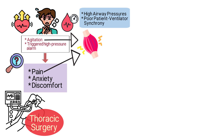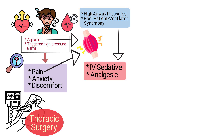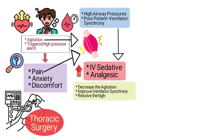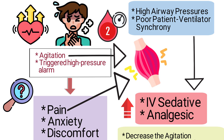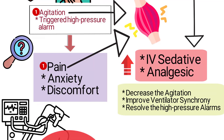Pain and agitation can increase muscle tension, resulting in high airway pressures and poor patient-ventilator synchrony. The best approach in this scenario is to administer an IV sedative or analgesic. This will help alleviate the patient's pain and anxiety, which should decrease the agitation, improve ventilator synchrony, and resolve the high pressure alarms. The patient's elevated blood pressure is likely secondary to pain or agitation, not a primary hypertensive issue.